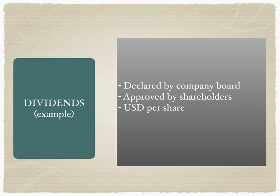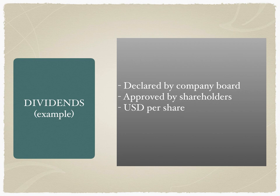Let's take an example of dividends. Dividends are entitlements given by the company to shareholders. The company accounts are finalized and approved by the board of directors, and the board makes an announcement of the dividends. In the United States and European Union they announce dividends as dollar per share, unlike Asian markets where they announce as a percentage of par value. Under IFRS and GAAP standards, both must be announced — that is, percentage of par value as well as dollar per share or rupee per share.